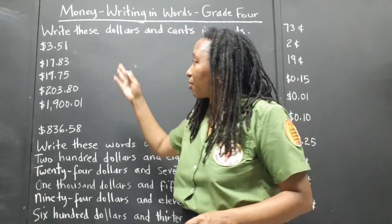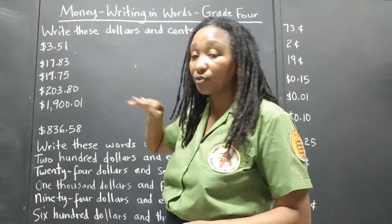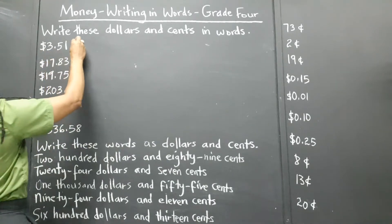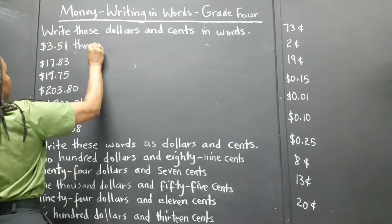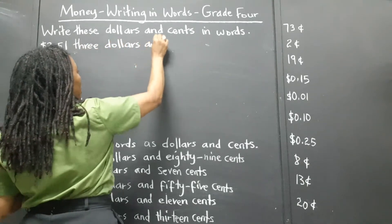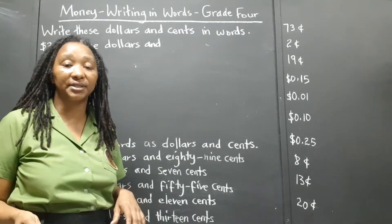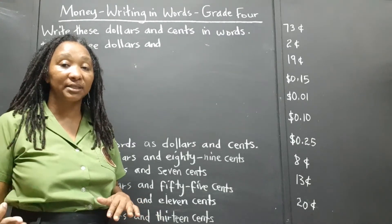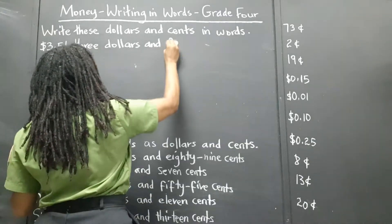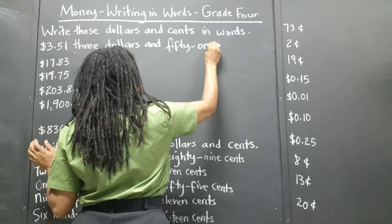Three dollars, fifty-one cents — let's write that in words. So it's three dollars and fifty-one cents. Remember, we're going to hyphenate the fifty-one. Whenever we're writing numbers, the tens and ones, there's a hyphen between the tens and ones. So: three dollars and fifty-one cents.